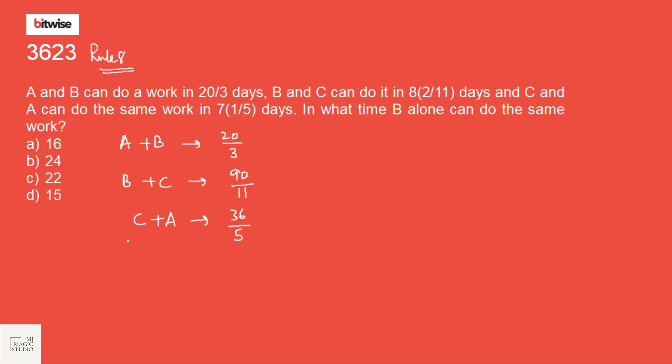For that, what we need is total of first A, B and C. If we look at this left hand side, when we are adding this, we can get twice of A, B and C. And here, we would be using our CM rule. So 20, 90, 36. Let it be 10 into 9 into 4.